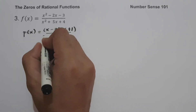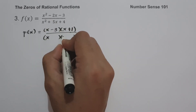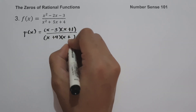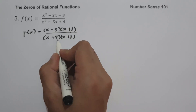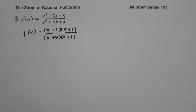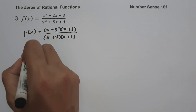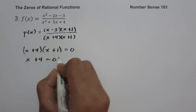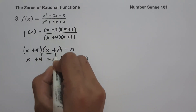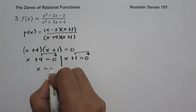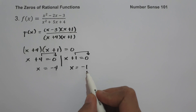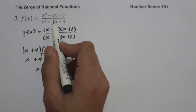For the denominator, the factors of x squared are x and x. We need two numbers that multiply to 4 and add to 5 — those are 4 and 1. Setting the denominator x plus 4 times x plus 1 equal to 0 gives x equals negative 4 and x equals negative 1. Therefore, the restricted values are negative 4 and negative 1.